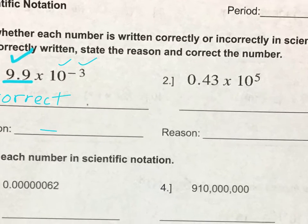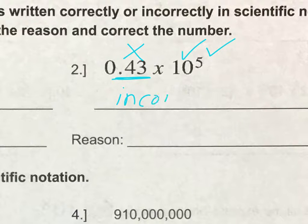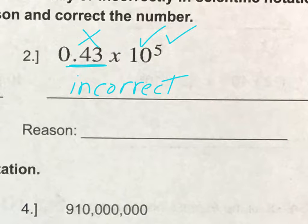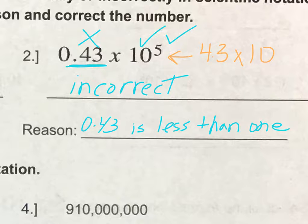Looking at number two, 0.43. Right off the bat, I see that this is less than 1 — that's incorrect. The power of 10 and the exponent is okay, but the coefficient is incorrect. The reason it's incorrect is because our coefficient needs to be between 1 and less than 10. So 0.43 is less than 1. To correct this, it should be 4.3 times 10. And if we move that decimal once, then this would be to the fourth power.